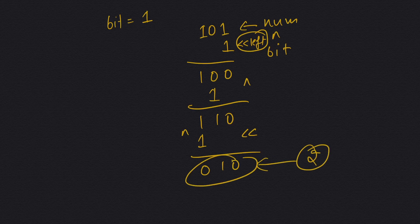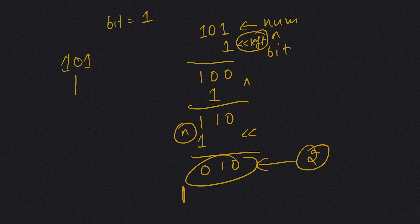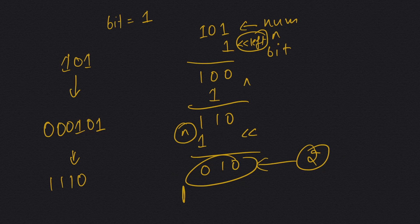But there is a problem: we don't know where to stop performing the XOR. Because 1 0 1 can also be represented as 0 0 0 1 0 1, and if we keep XORing with 1 we will get 1 1 1 0 1 0 — which is wrong. We need a way to stop the XOR at the right position.